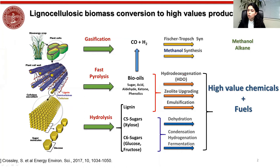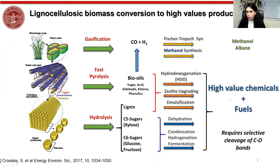In order to convert acids, aldehydes, ketones, and phenols to high-value chemicals and fuels, we require selective breaking of the C-O bond without saturating the C=C bond, while also reducing the number of carbons on the molecule. For this we require a specific catalyst, which we will discuss later. For now, let's focus on how we can obtain pentenoic acid from biomass — the molecules we are going to study in this presentation.